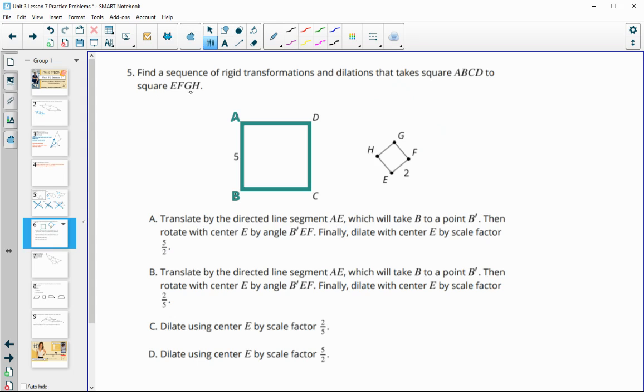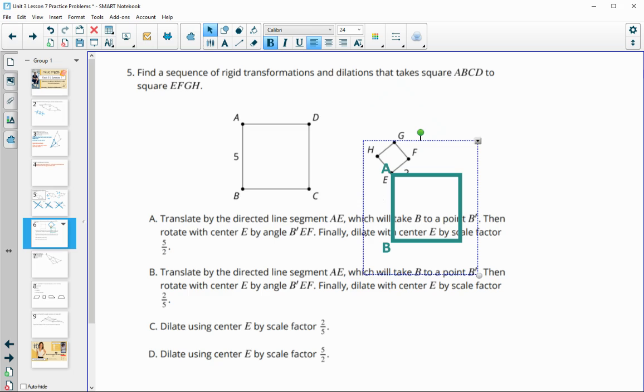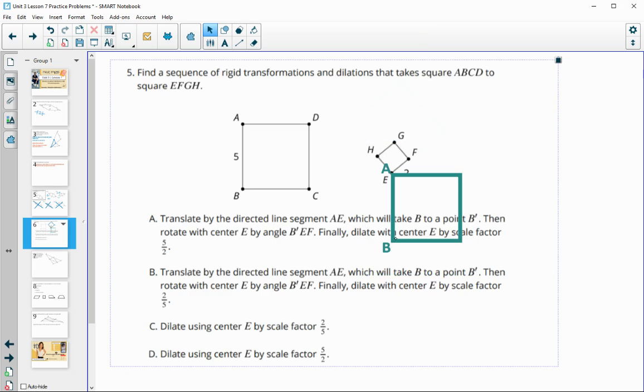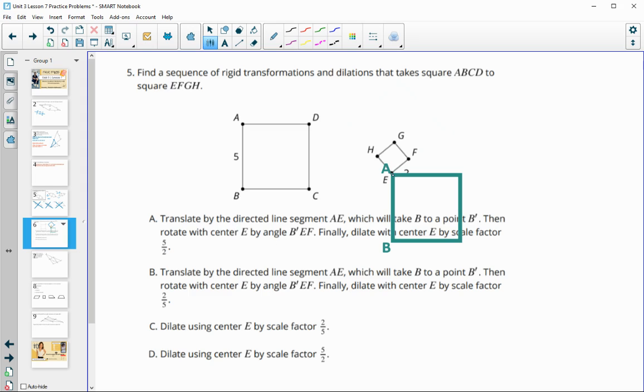Number five: find a sequence of rigid transformations and dilations that take square ABCD to EFGH. So let's look at this. First one says translate it by directed line segment AE, so that would move A to E. Then it says which will take point B to another random point, so it took B to here, to B prime. Then it says rotate by angle with center E. Okay, by angle B prime—so remember this is B prime now—B prime EF. So this angle here: rotate on this angle. That will take this side over to this one, so we'll do that.